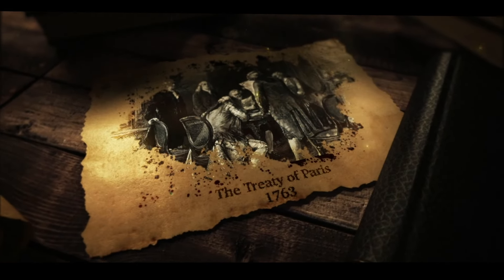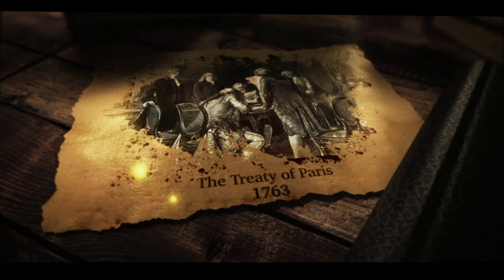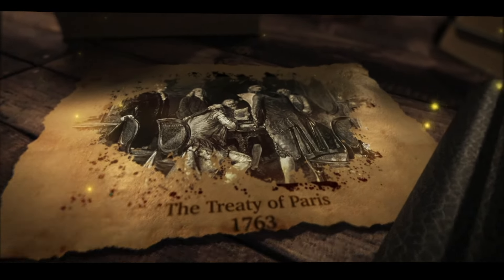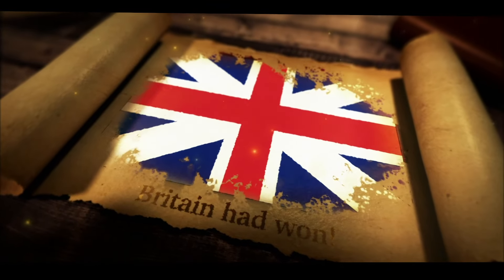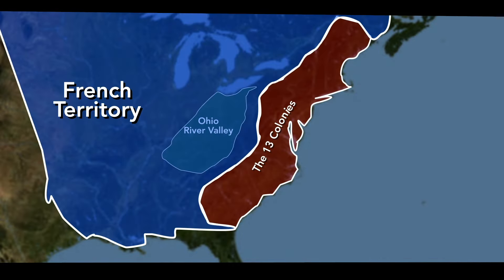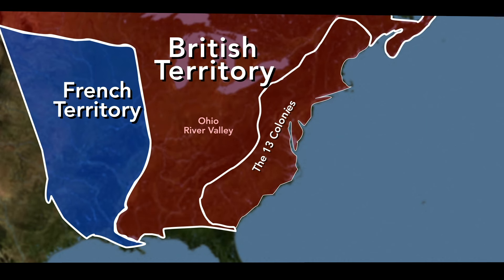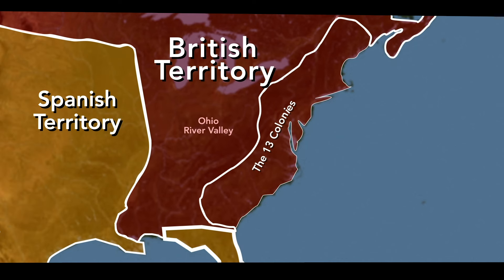A few years later, fighting ended everywhere. Britain and France signed the Treaty of Paris of 1763, officially ending the Seven Years' War. Britain had won. In the terms of the treaty, Britain was given French territory in Canada and territory east of the Mississippi River, including the Ohio River Valley. France also had to give up its claims to territory west of the Mississippi River — Louisiana — to Spain, who entered the war in 1762. France was left with no territory in North America.